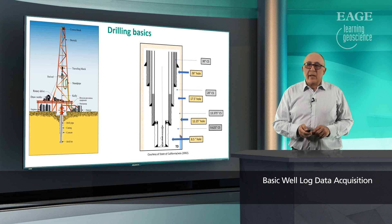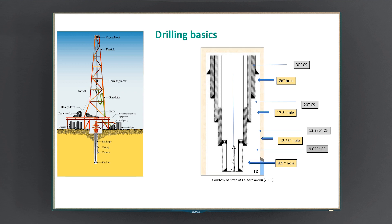Onshore operations are perhaps more complicated, as you need to prepare the ground, accessibility, and the site away from built-up areas. On the right-hand side, you see a profile of the well drilled. You start with the big hole — a 26-inch hole — then go into the 17.5-inch hole, then 12.25-inch hole, and end up with the 8.5-inch hole.